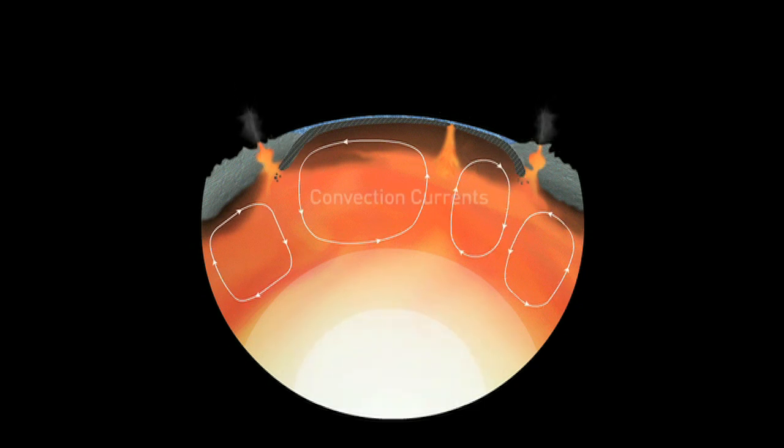It's called a convection current and it's like a pot of soup on a rolling boil but happening very slowly on a planetary scale.